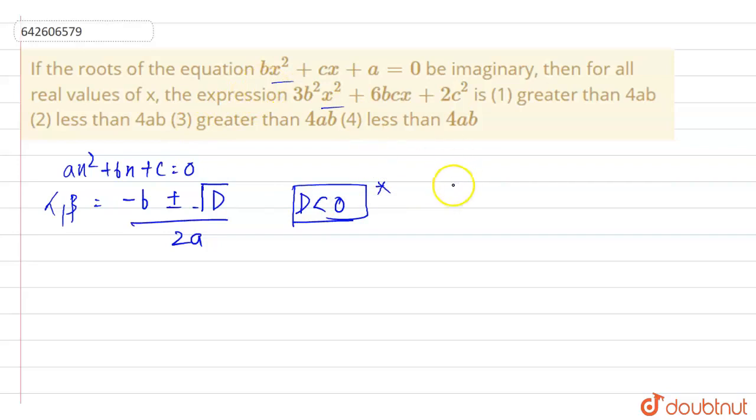So we have been given that this equation has an imaginary root. So for this equation we will apply this. So what is D? D is given as b square minus 4ac for this b and a and c.